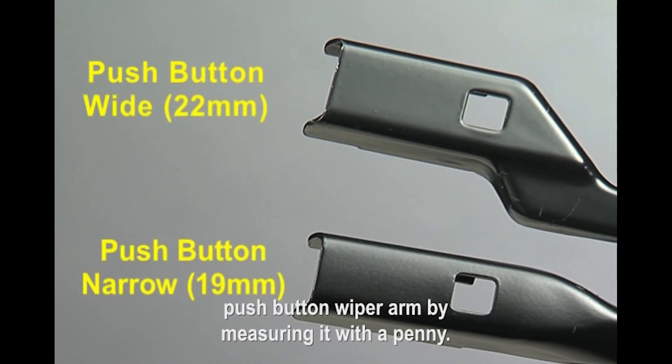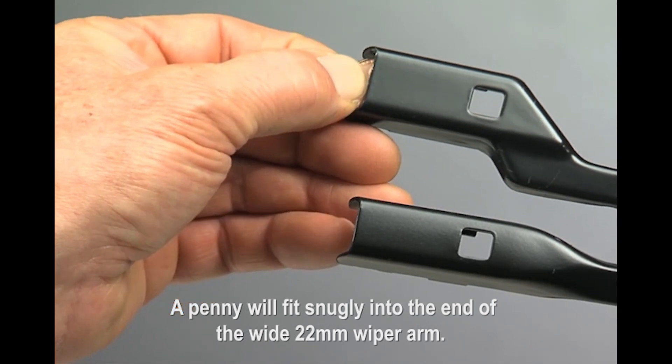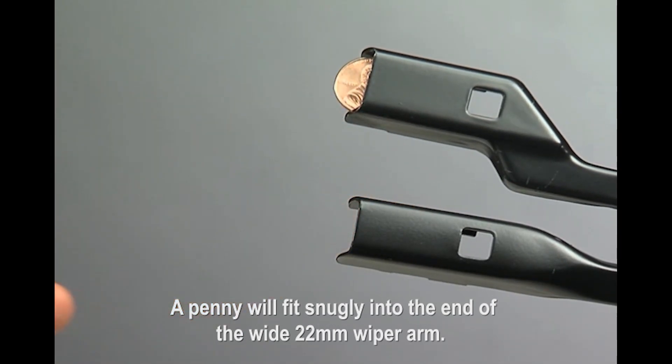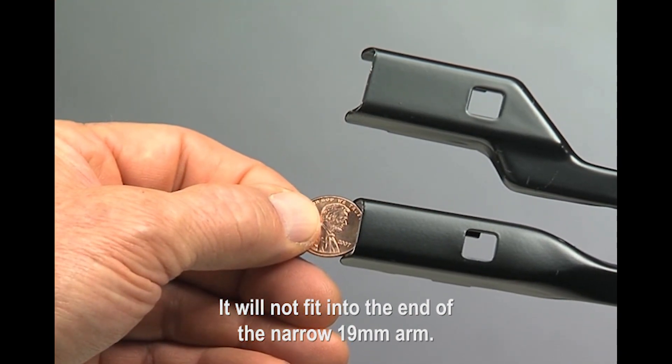Determine whether you have a wide or narrow push button wiper arm by measuring it with a penny. A penny will fit snugly into the end of the wide 22 millimeter wiper arm. It will not fit into the end of the narrow 19 millimeter arm.